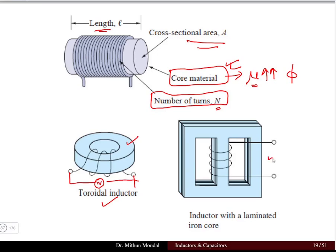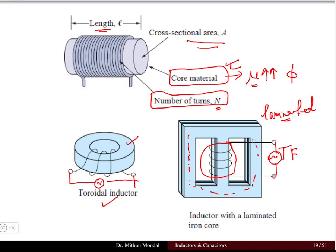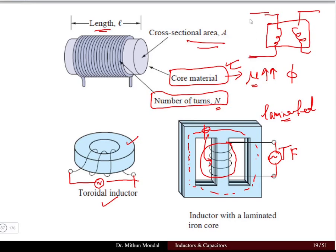One example is a toroidal inductor where you can see the core material and coils connected on it. Another example is a transformer, where the coil is wound on a former known as the core. The core is laminated to reduce eddy current losses. When AC supply is given to the coil, flux is established in the core.